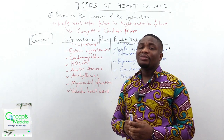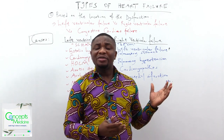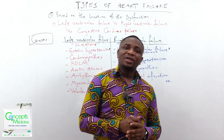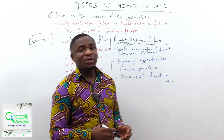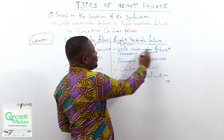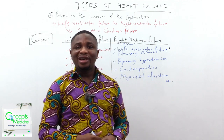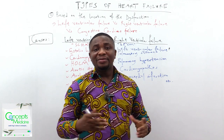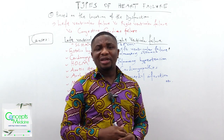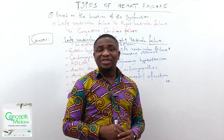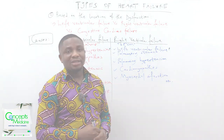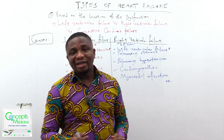Right ventricular failure involves the right ventricle being unable to pump venous blood efficiently into the lungs for oxygenation. Using the mnemonic 'LP2CM': left ventricular failure is the most common cause — when LVF causes RVF, the coexistence of both is called biventricular failure or congestive cardiac failure. Other causes include pulmonary hypertension, pulmonary stenosis, cardiomyopathies, and myocardial infarction.